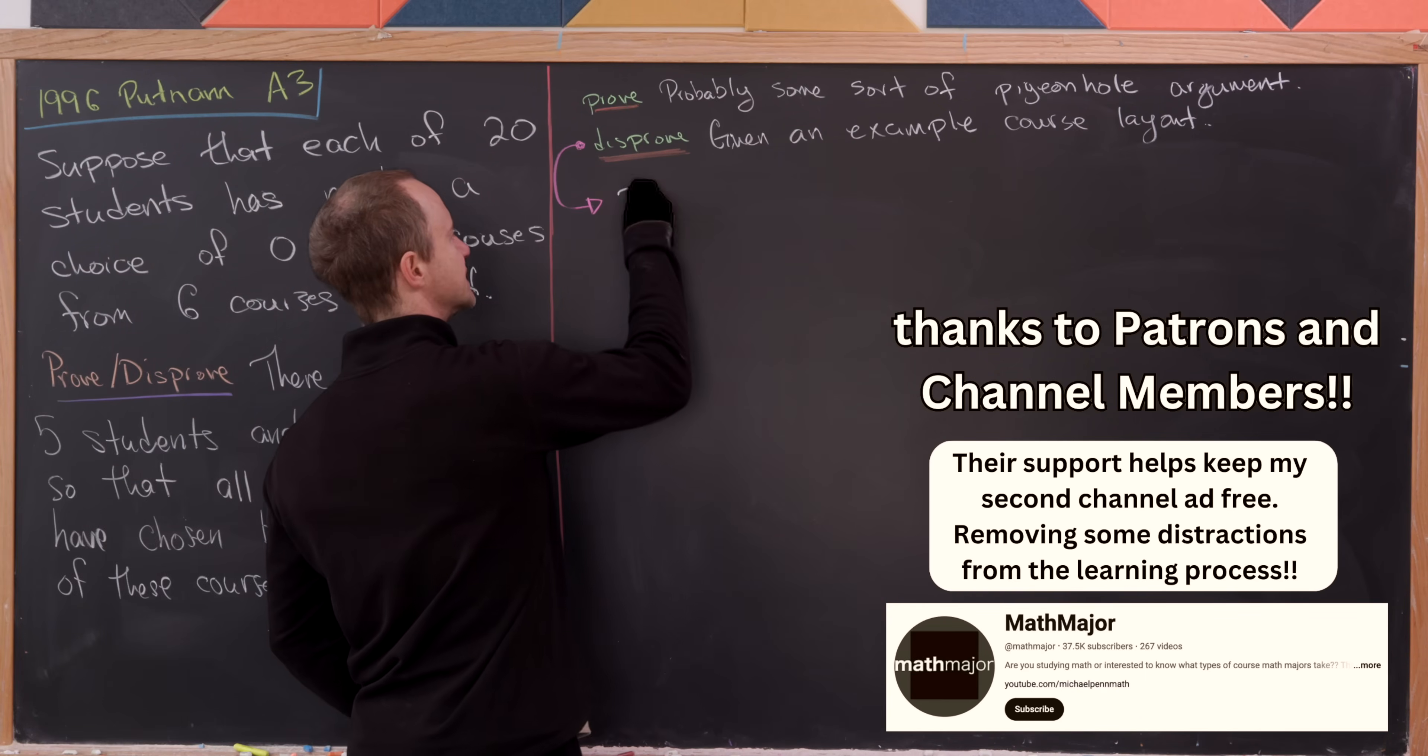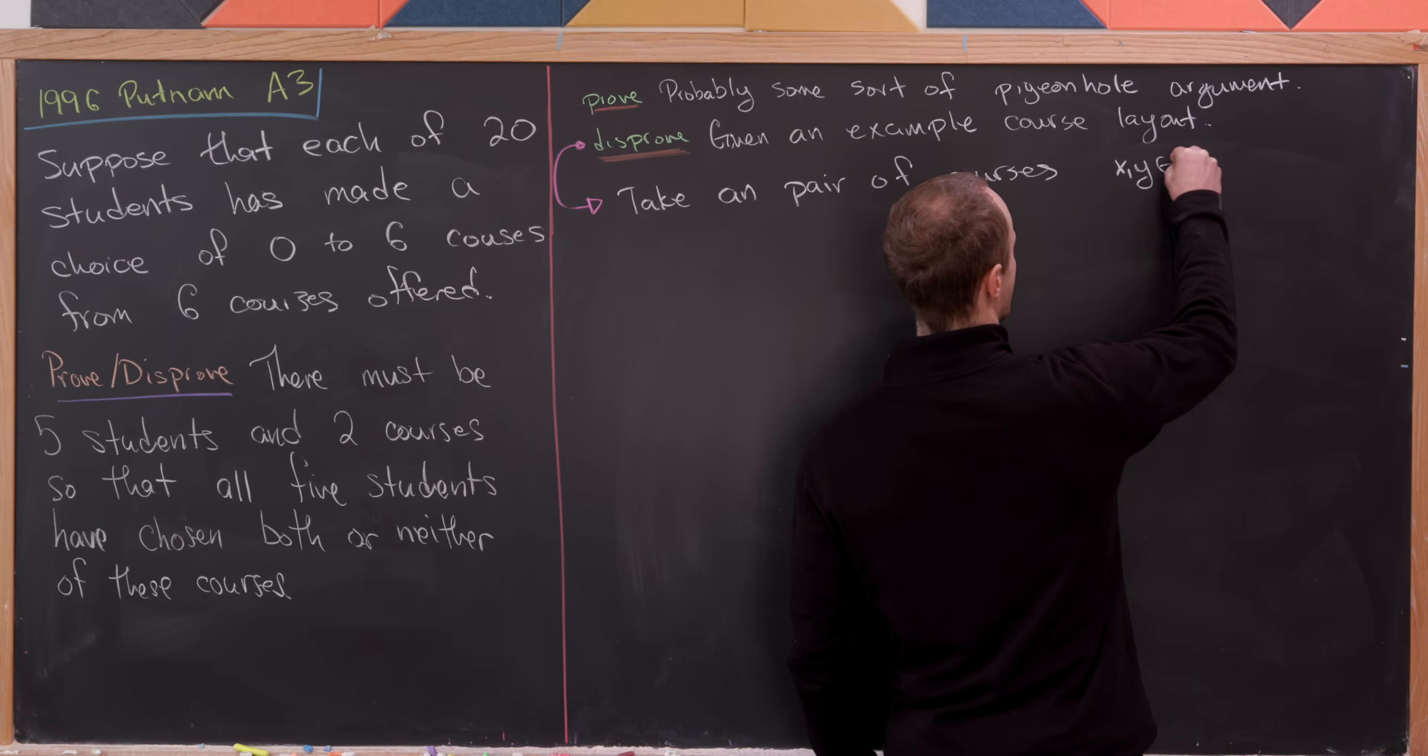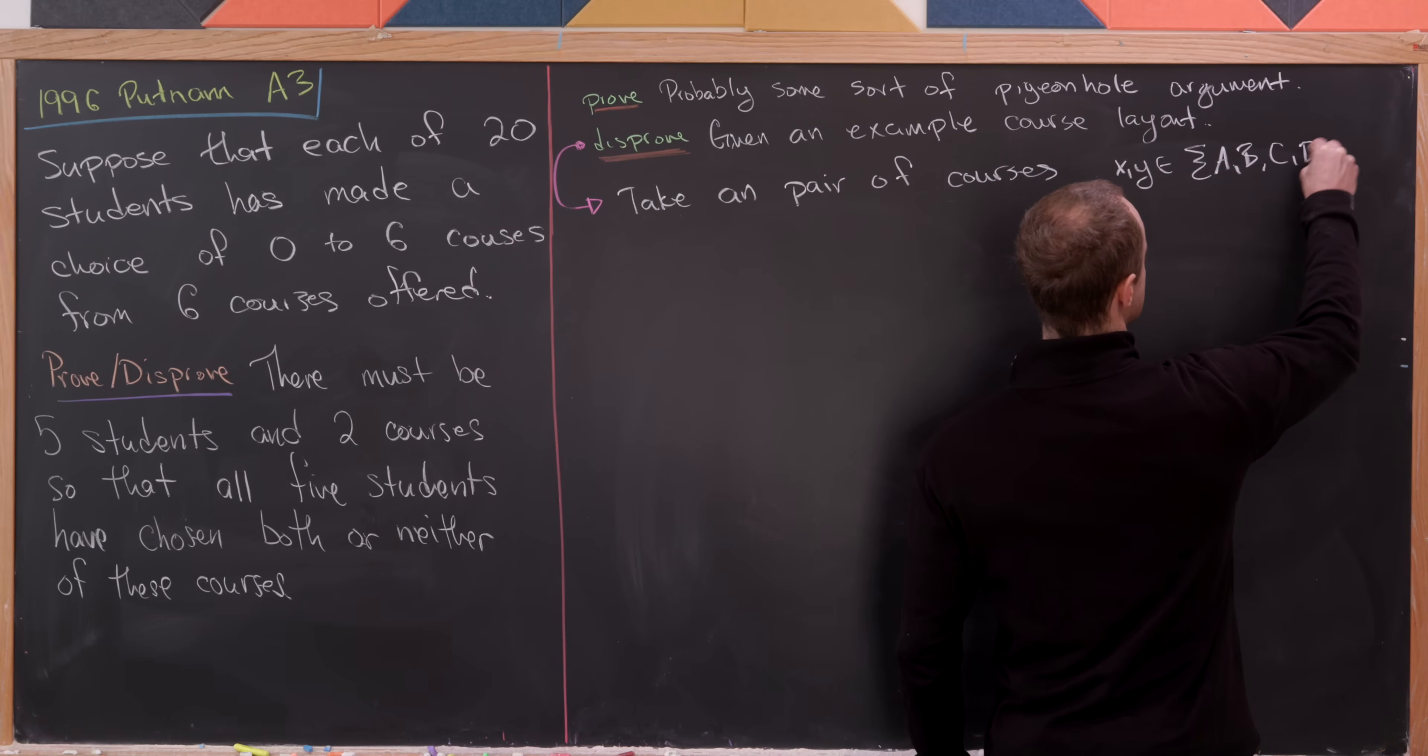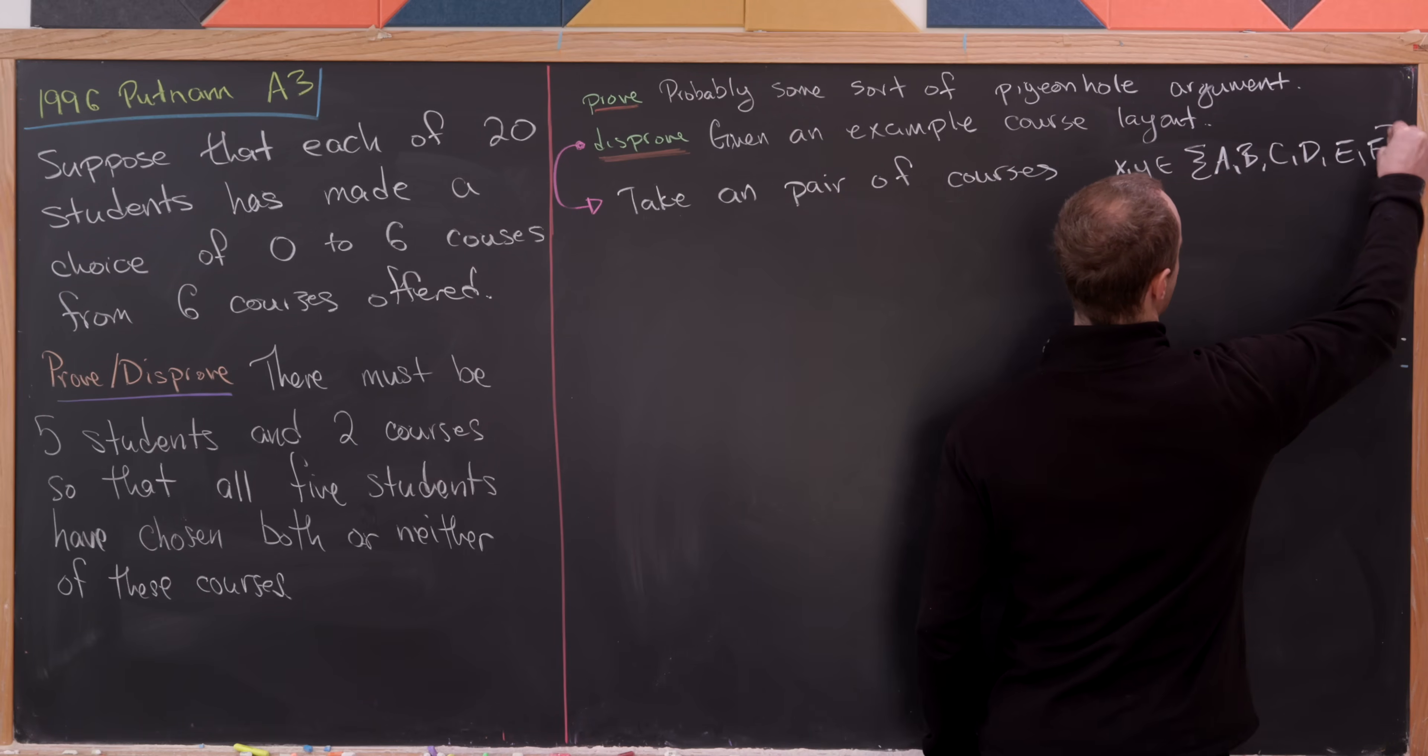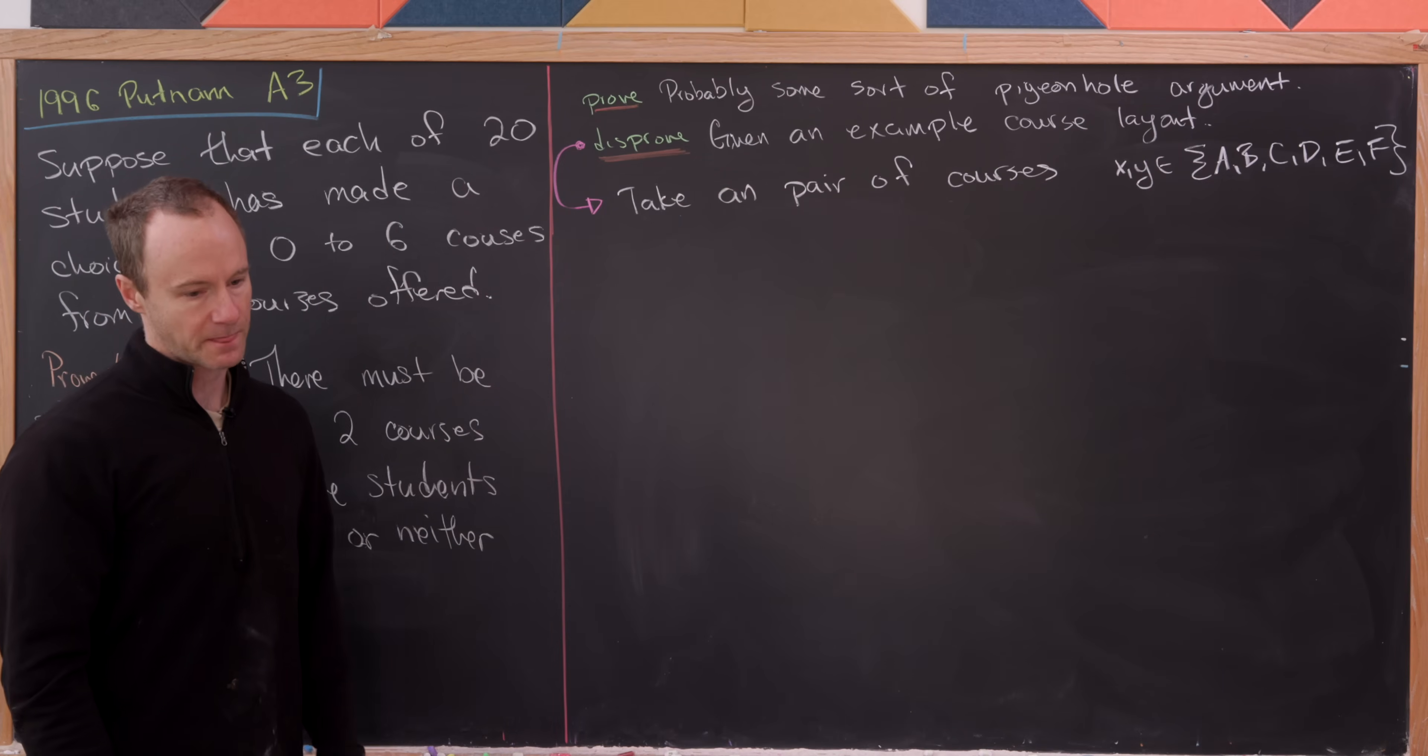That being said, let's look at an argument that we could have done actually before writing down this enumeration. So what we'll do is we'll take an arbitrary pair of courses. I'll call them X and Y from the set A, B, C, D, E, F. So in other words, from the set of courses that we have available.